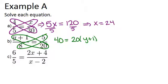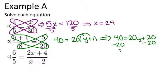So you have to distribute that 20 in order to make sure that you are doing the multiplication correctly. So once you distribute the 20, you get 40 equals 20y plus 20. To keep solving that, you can minus 20 from both sides, and you get 20 equals 20y. So therefore, y equals 1.